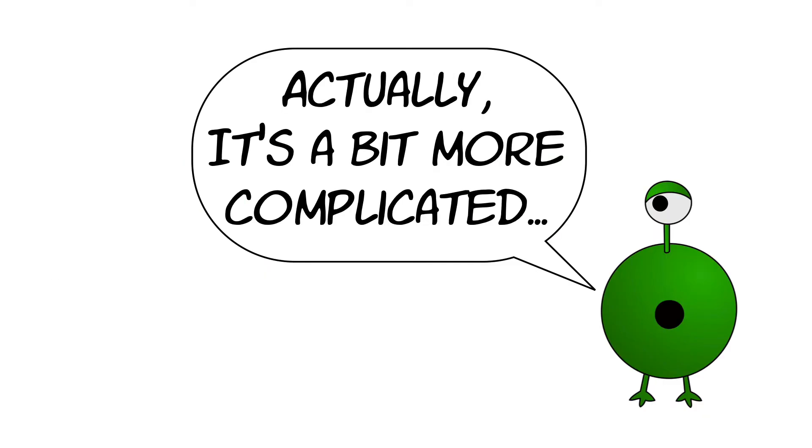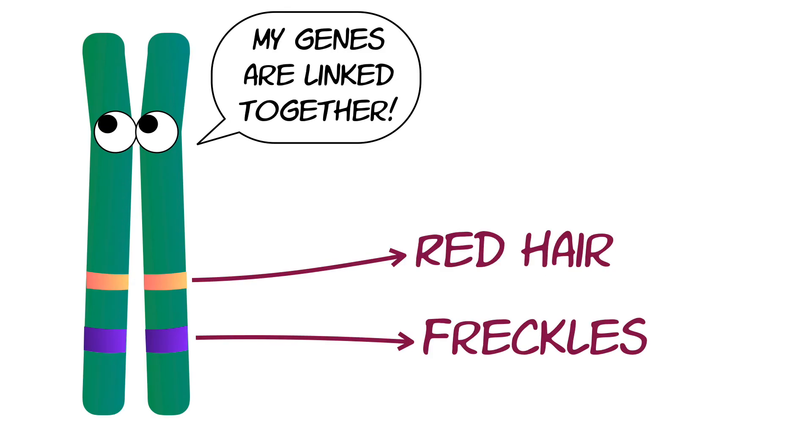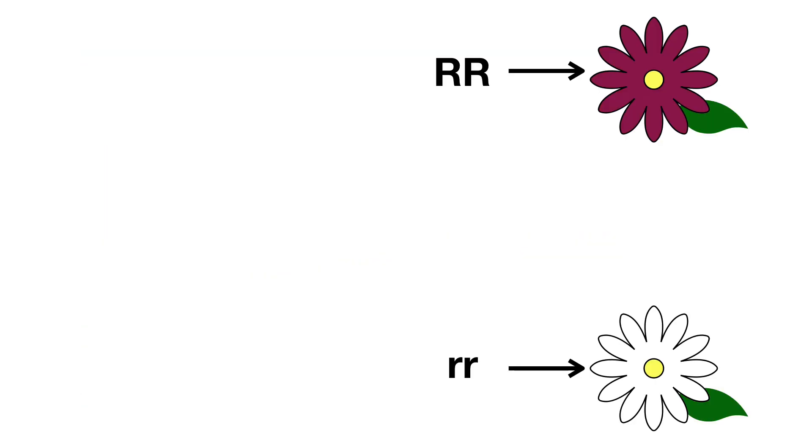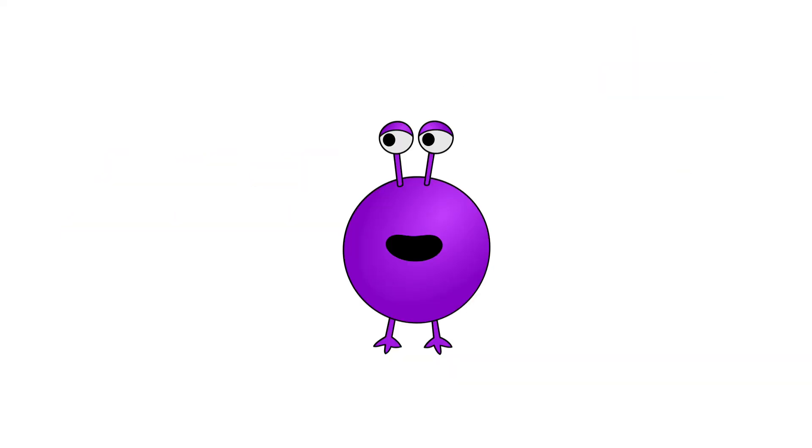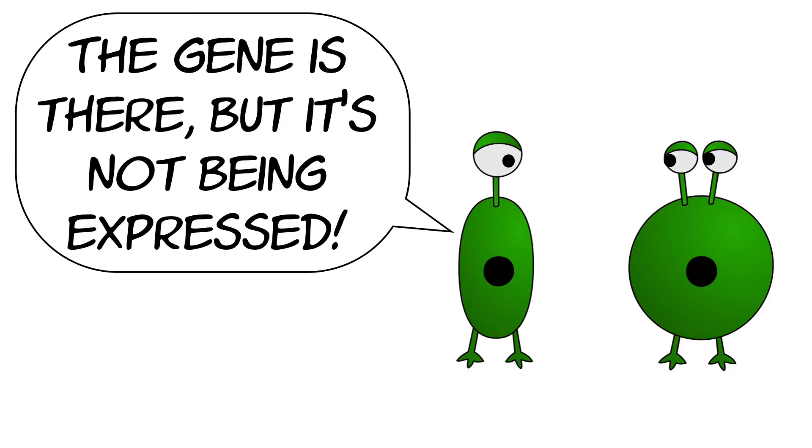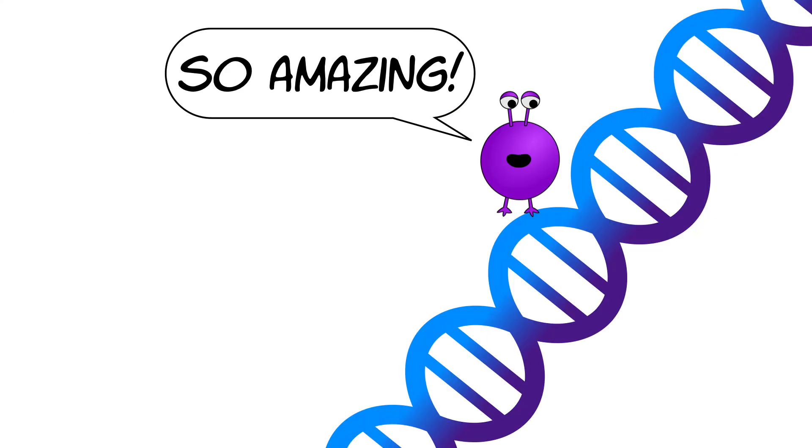But in reality, it turns out that genetics is a bit more complicated than Mendel's initial theories. Not all traits are independent of each other. Not all traits are simply dominant and recessive. Mutations cause predictions to go astray, and epigenetics and gene regulation and expression introduce a whole other layer of complexity over everything, making genetics one of the most dynamic and interesting fields to study.